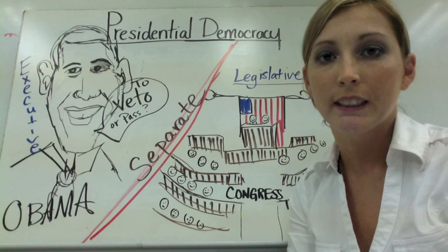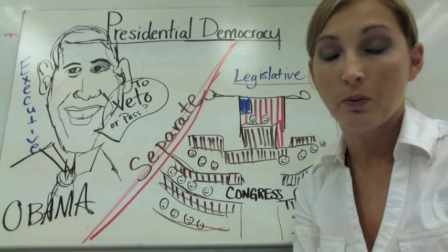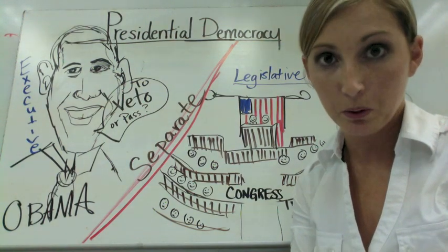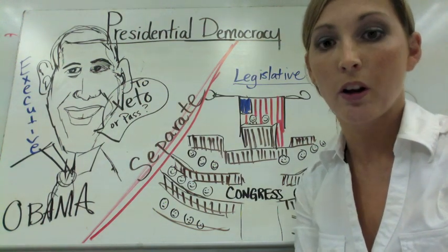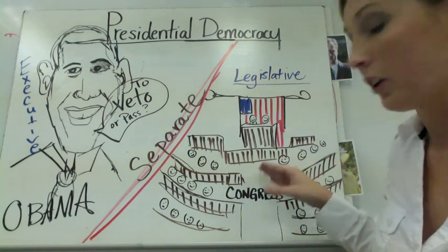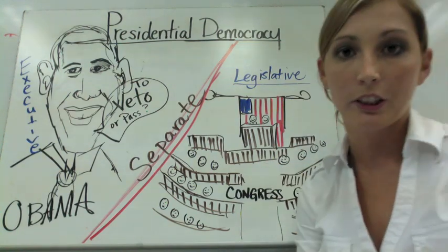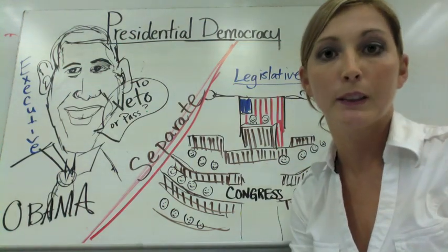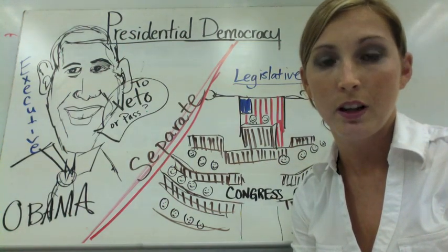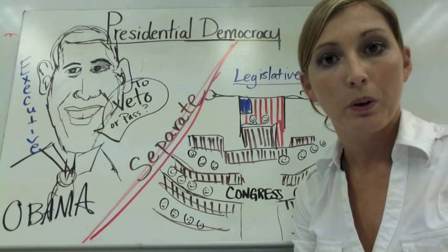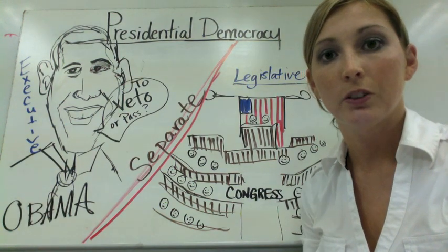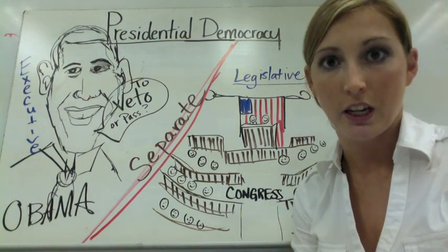The president is voted in and elected by the people, and so are the legislative members. Our Congress, which is our legislative branch, is composed of the House of Representatives and the Senate, both of which are voted on by constituents of each state.